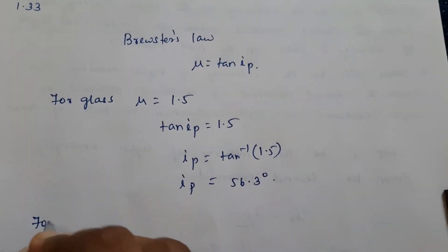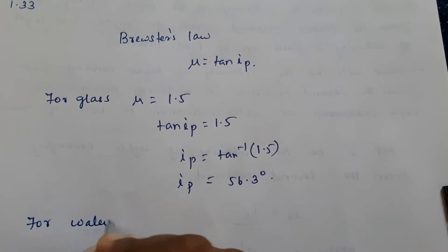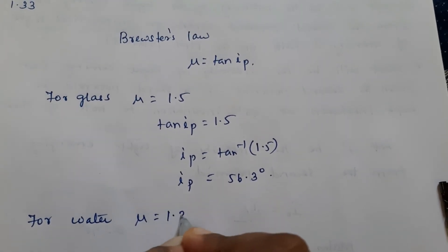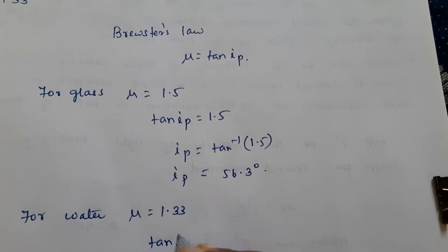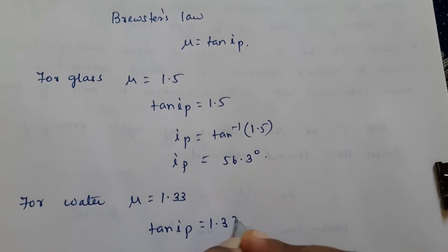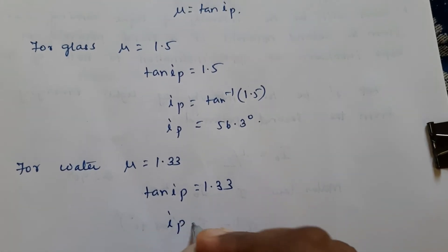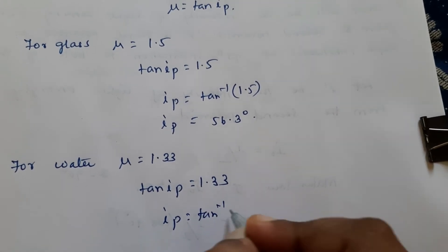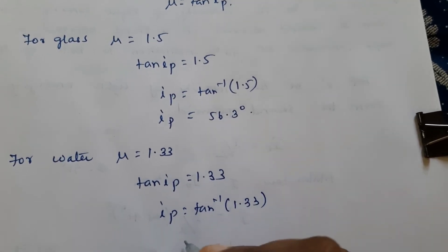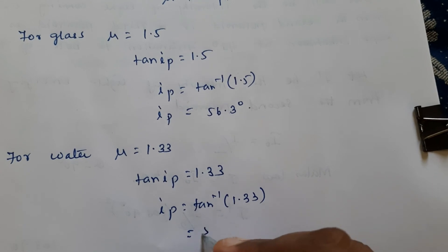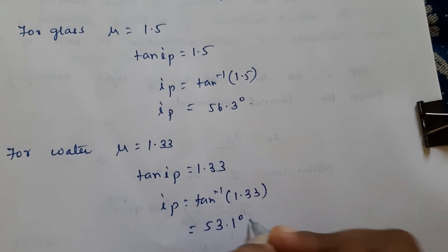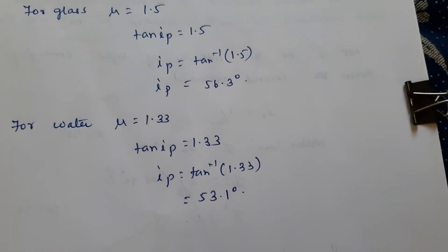Now for water, μ = 1.33, so tan ip = 1.33. Therefore ip = tan⁻¹(1.33), and the value is 53.1 degrees.